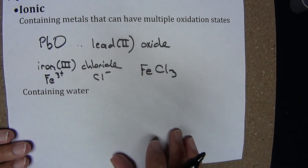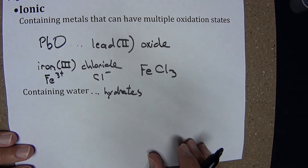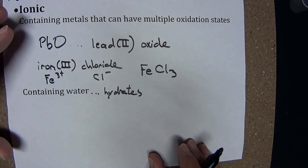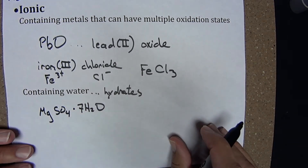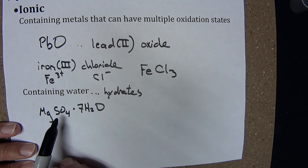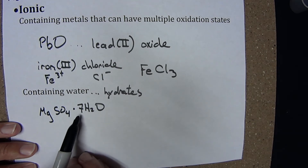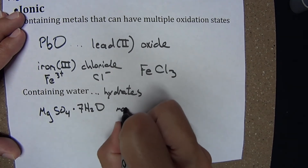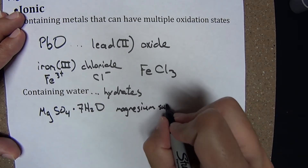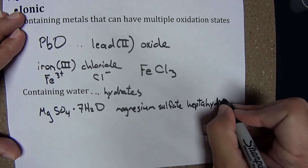Sometimes we have ionic compounds that contain water. These compounds are called hydrates, and the water molecules are incorporated into the solid's crystalline structure. An example is MgSO₄·7H₂O. I name this in much the same way as ionic compounds: this is magnesium sulfate. Then to incorporate into the name the fact that this is a hydrate, I use a Greek prefix representing 7 — hepta — and then the word hydrate. The complete name is magnesium sulfate heptahydrate.